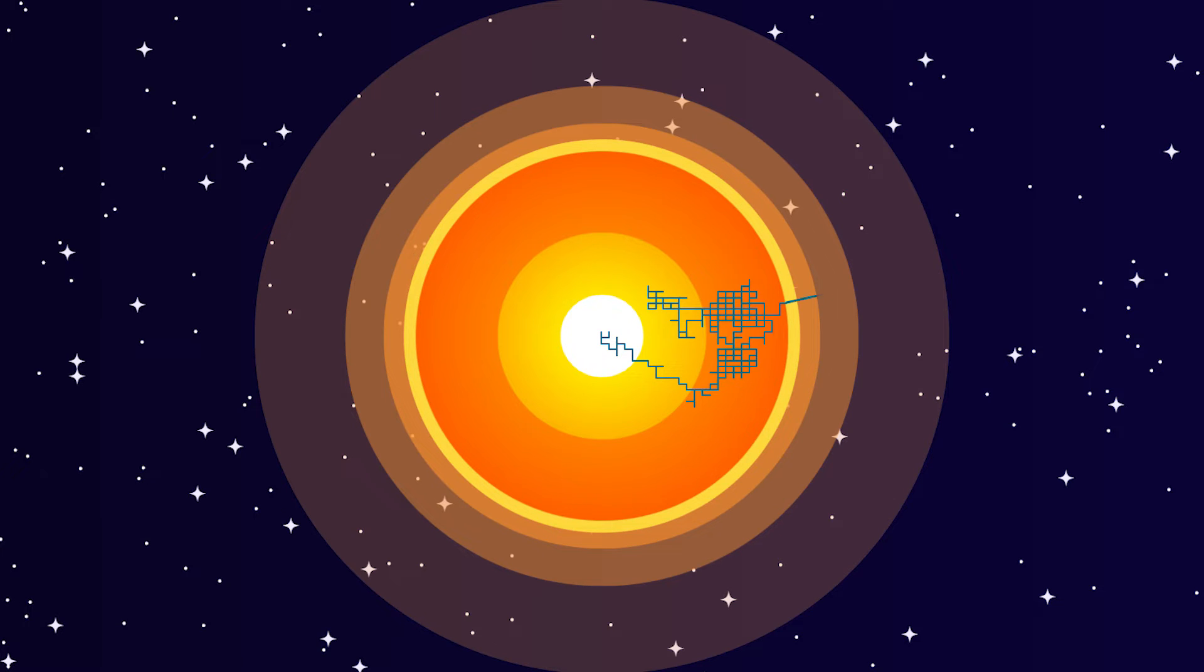So for a simple 2D random walk, a particle can either go up, down, left, or right with equal probabilities. Now of course, in the sun this becomes a lot more complicated with the interactions happening in 3D, and with all possible re-emission directions happening across all angles of the sphere.